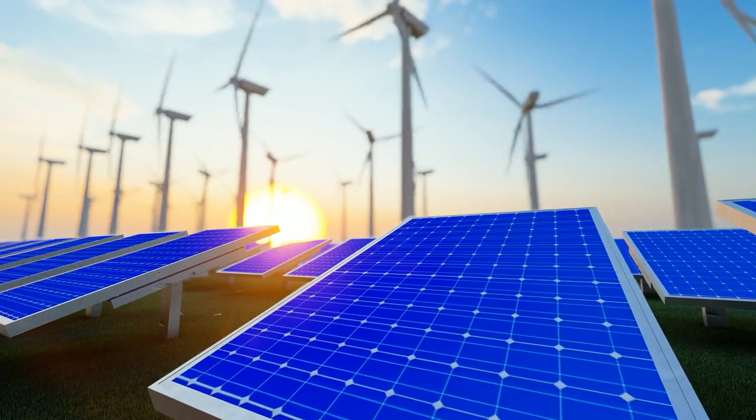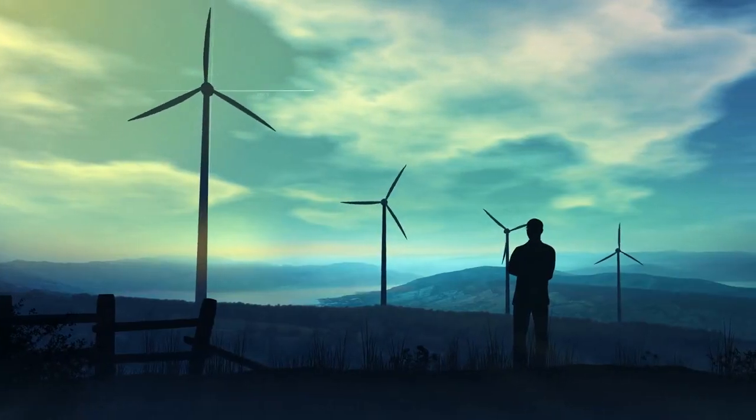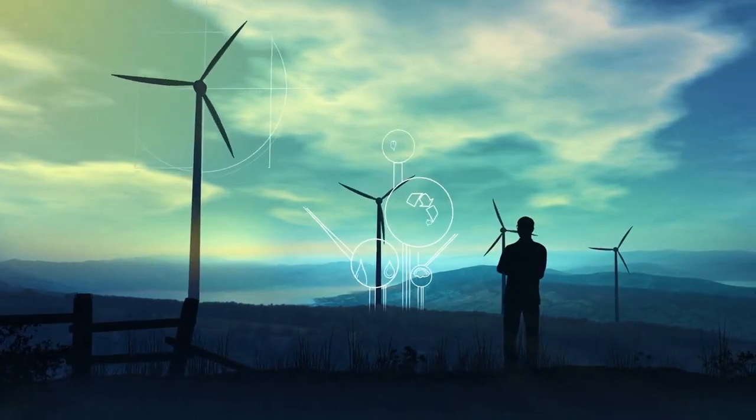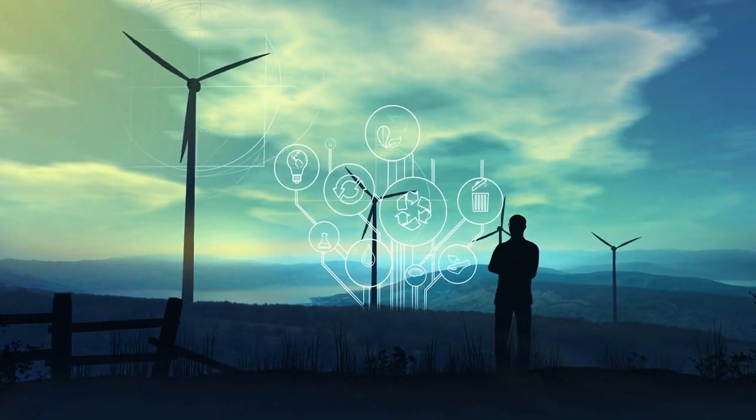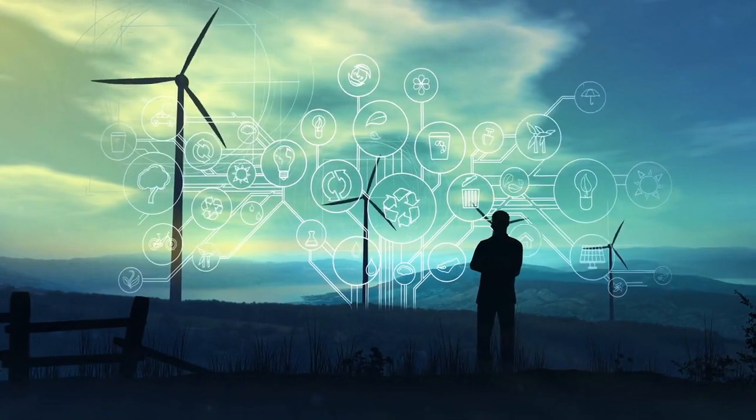Real-world examples highlight the impact of hybrid photovoltaic and wind systems. In remote areas with limited access to the grid, hybrid systems have brought electricity to communities that were once off the map, improving living standards and stimulating economic growth.